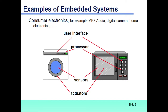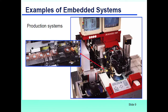Another example of embedded systems is consumer electronics — such as digital cameras and home electronics like microwave ovens — which have a user interface, processor, sensors, and actuators all inside the system. A further example is in production and industrial systems, where many motors, equipment, and machines are controlled by modern embedded systems.